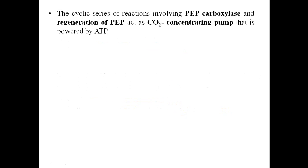RuBisCO binds carbon dioxide with ribulose bisphosphate rather than oxygen, so photorespiration does not occur in C4 plants. The PEP carboxylase enzyme and the regenerated phosphoenol pyruvate together act as a carbon dioxide concentrating pump, requiring energy to function within the cycle.